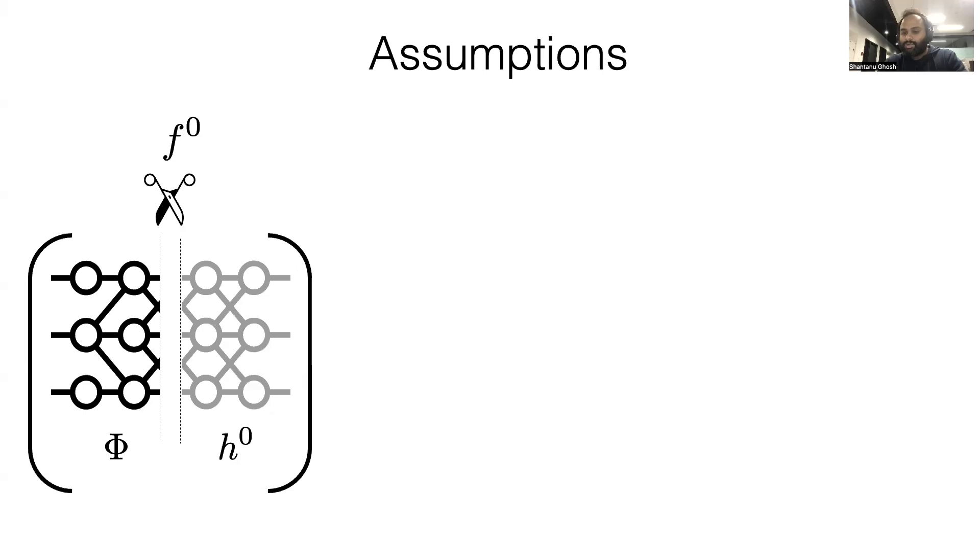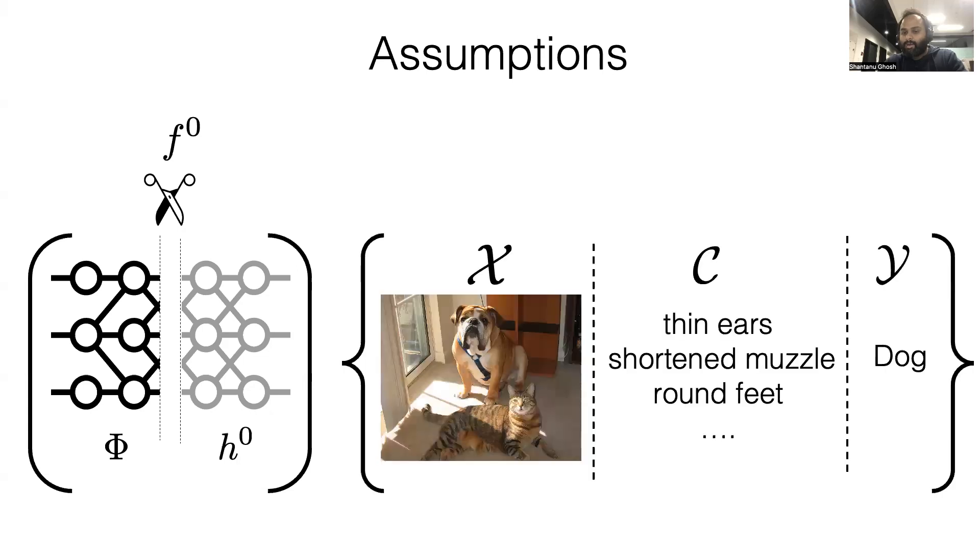Our first assumption is that the initial black box F0 to be a composition of an encoder phi and a classifier H0. Also, we assume you have the concepts either in the training dataset or we get them from external sources.